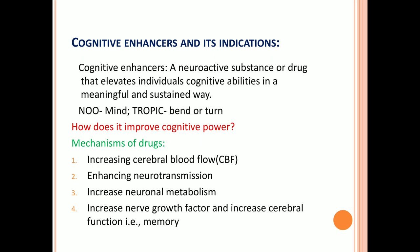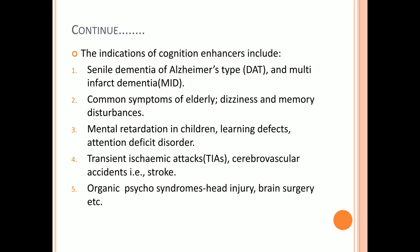Glutamate is mainly responsible for memory. It can improve learning and memory, and it regulates the development and creation of nerve contacts. If other problems occur, they may affect memory loss. These issues lead us to the indications of cognition enhancers.